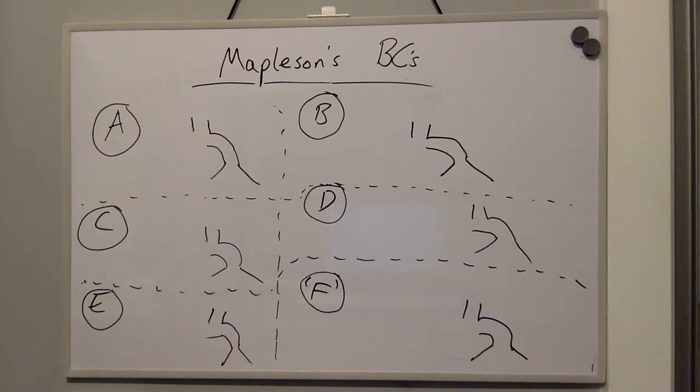reservoir bag, tubing, expiratory valve and face mask. They are less economical than circle systems because fresh gas flow normally needs to be at least minute ventilation to prevent re-breathing.